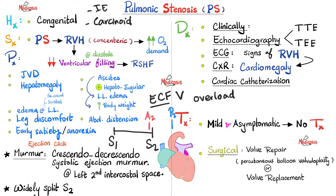How can we diagnose pulmonic stenosis? We do so clinically. Anytime you hear a murmur with your stethoscope, the next logical step is to do an echocardiography, preferably with Doppler. An EKG will show signs of right ventricular enlargement. Chest X-ray will show cardiomegaly. Cardiac catheterization can also help. How can we treat pulmonic stenosis? If it's mild and asymptomatic, no treatment is needed. If it is severe and symptomatic, surgical options include repairing the valve or replacing the valve.